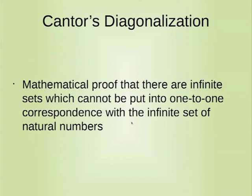So, Cantor's diagonalization is a mathematical proof that there are infinite sets which cannot be put into one-to-one correspondence with the infinite set of natural numbers. As we mentioned, the infinite set of natural numbers is countable. It actually has a cardinality of aleph-null. Aleph is the first letter of the Hebrew alphabet. And that's the cardinality of an infinite set which is countable.